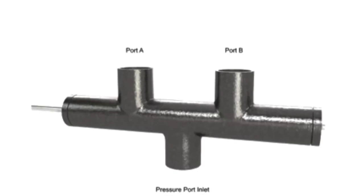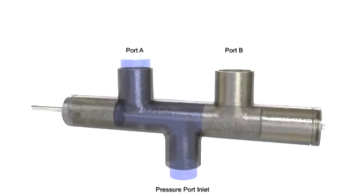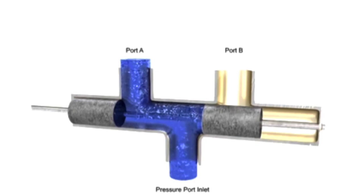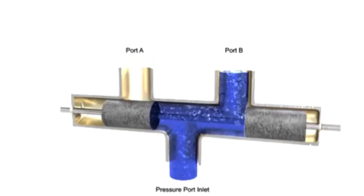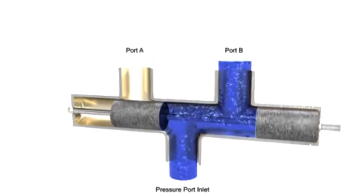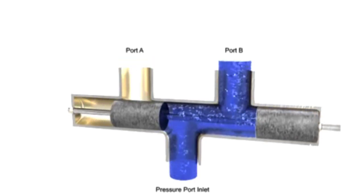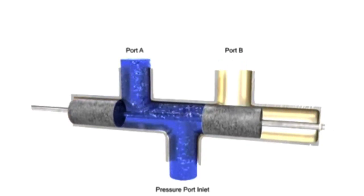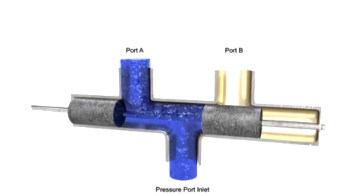Directional control valves are used to stop, start, route, and divert fluid streams without affecting the pressure level or the flow rate of the system. Directional control valves are identified by the number of ways that fluid can flow and the number of positions the valve can produce.